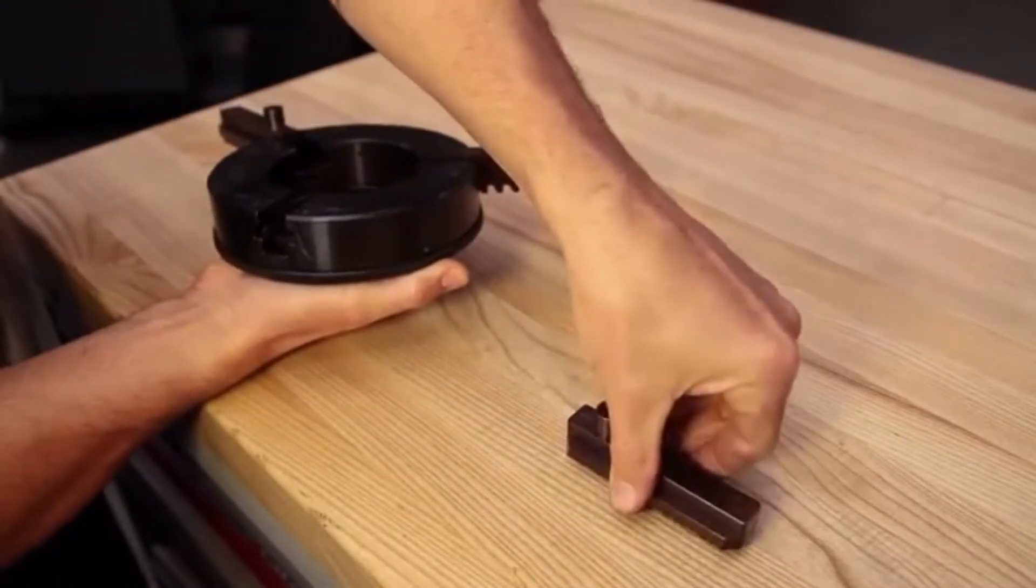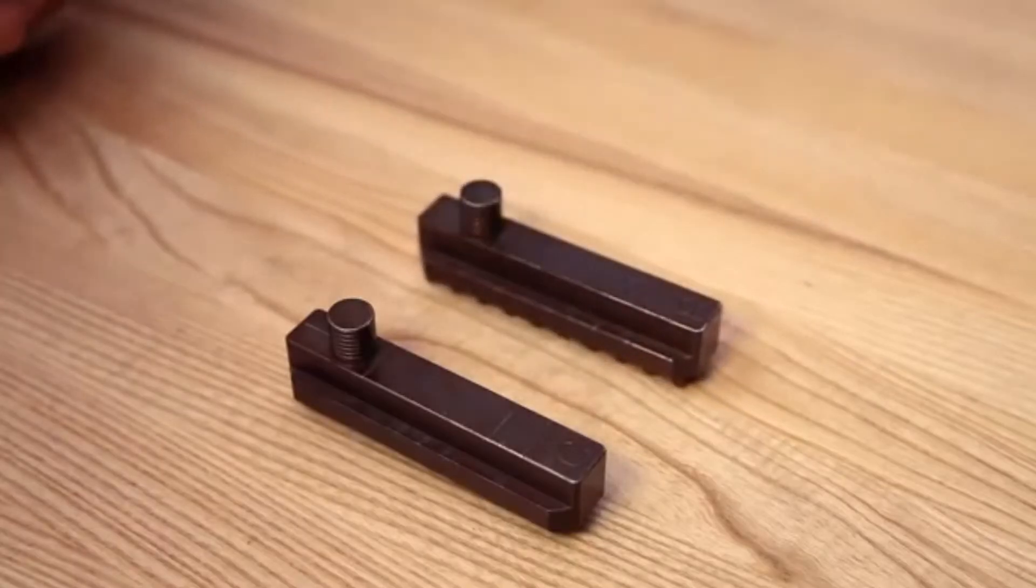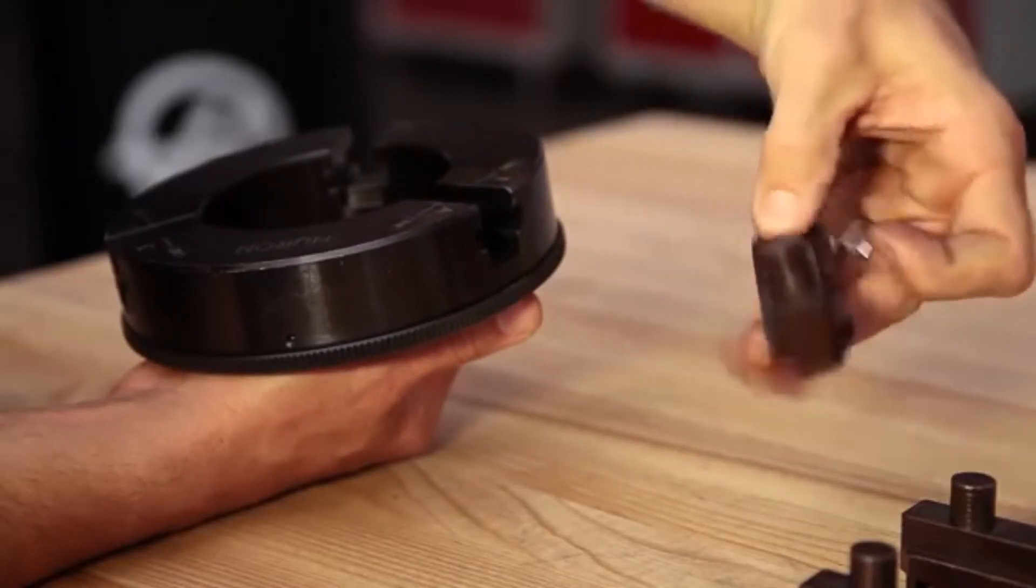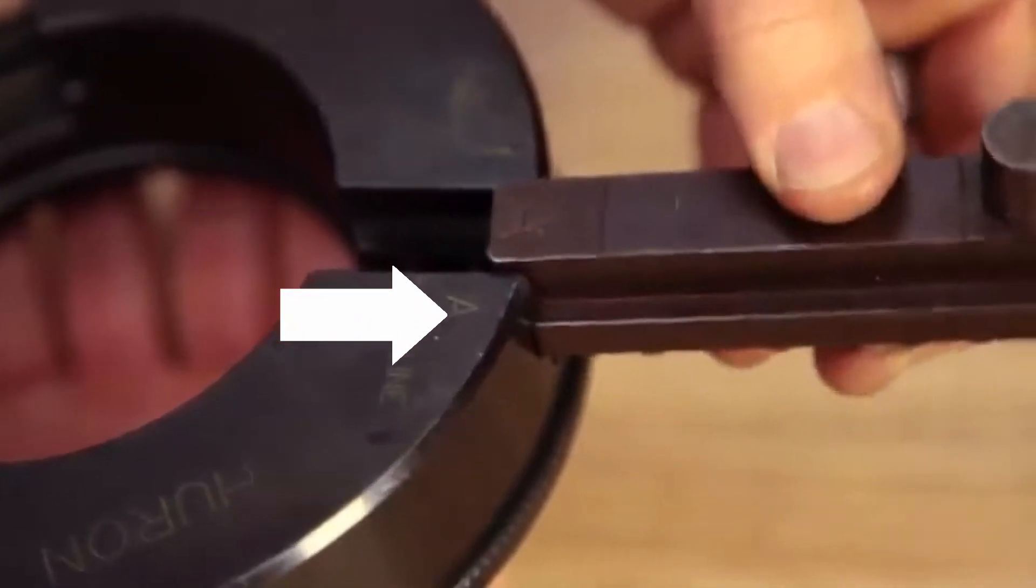We are going to do ID turning, so we need to turn the Heron Topjaw forming device master jaws around. When reversing the master jaws, we need to align the letter on the master jaw with the body.